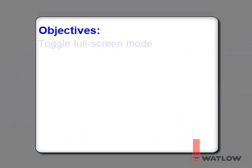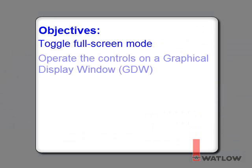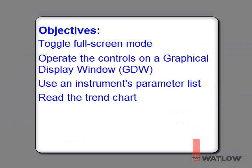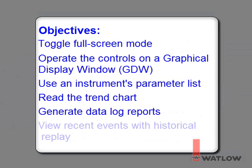In this installment you will learn how to toggle full screen mode, operate the controls on the graphical display window, or GDW, use an instrument's parameter list, read the trend chart, generate data log reports, and view recent events with historical replay.